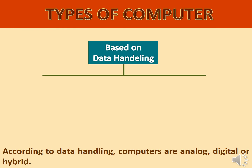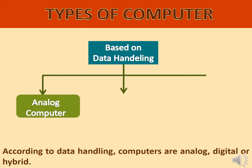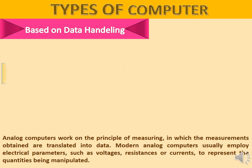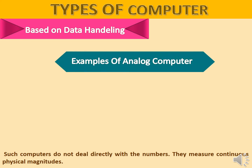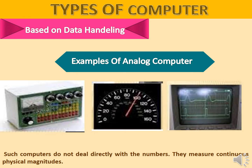According to Data Handling, computers are classified as Analog Computer, Digital Computer, and Hybrid Computer. Analog Computers work on the principle of measuring, in which the measurements obtained are translated into data. Modern analog computers usually employ electrical parameters such as voltages, resistances, or currents to represent the quantities being manipulated. Such computers do not deal directly with numbers; they measure continuous physical magnitudes.